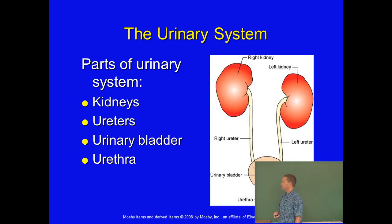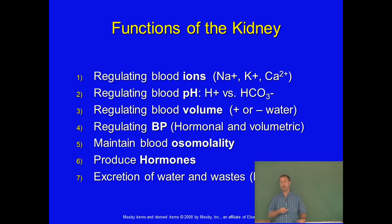Functions of the kidney: regulate blood ions — make sure we have the correct amounts of sodium, potassium, chloride ions, and so on. Also regulating blood pH, making sure blood doesn't get too acidic or basic. The normal pH for mammalian blood is about 7.35 to 7.45, so 7.4 is fine.